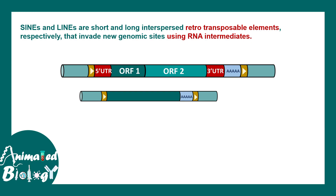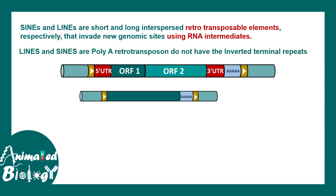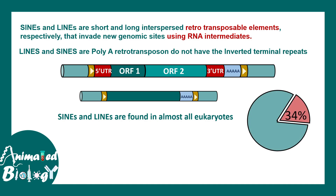SINEs and LINEs are short and long interspersed retrotransposable elements, which are one category of transposons that transpose from one region to another using RNA as an intermediate. LINEs and SINEs are poly-A retrotransposons, which are different from the retroviral retrotransposons and lack inverted terminal repeats. They are found in almost all eukaryotes and comprise 34% of the eukaryotic genome.